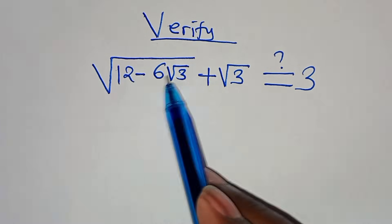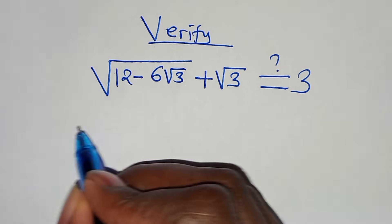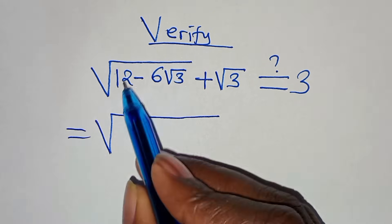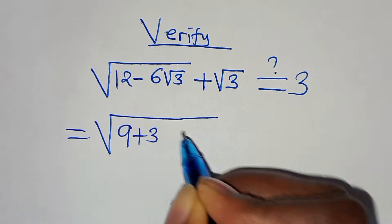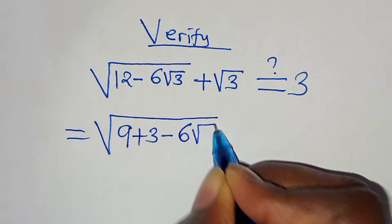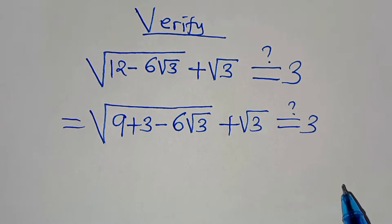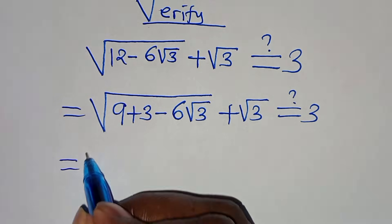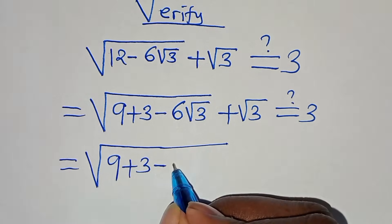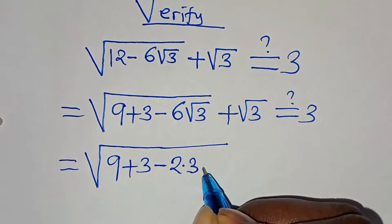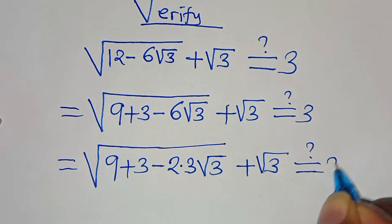We have the square root of (12 minus 6 square root of 3) plus square root of 3 equals 3. We can express 12 as 9 plus 3, and 6 as 2 times 3, so this becomes the square root of (9 plus 3 minus 2 times 3 times square root of 3) plus square root of 3, which should give us 3.